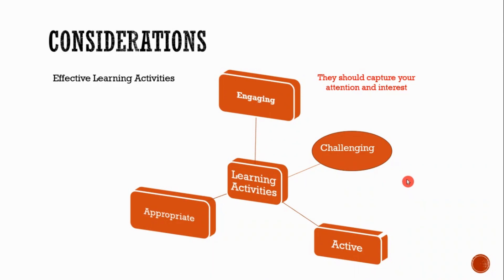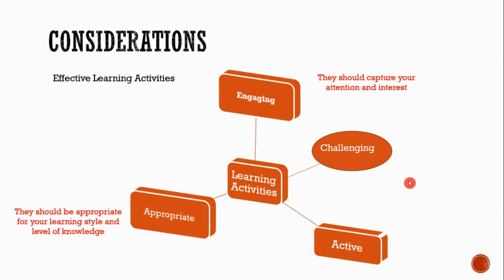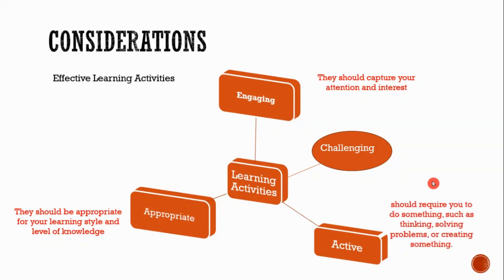Another aspect to consider is that your learning activity needs to be appropriate, especially for your learners' learning styles and their level of knowledge. CBET focuses on individual learning and we have variabilities of learners in class — beginners, intermediate, or advanced levels. Your learning activity should also be active, meaning a learner should be able to do something, such as critical thinking, solving a problem, or even creating something.